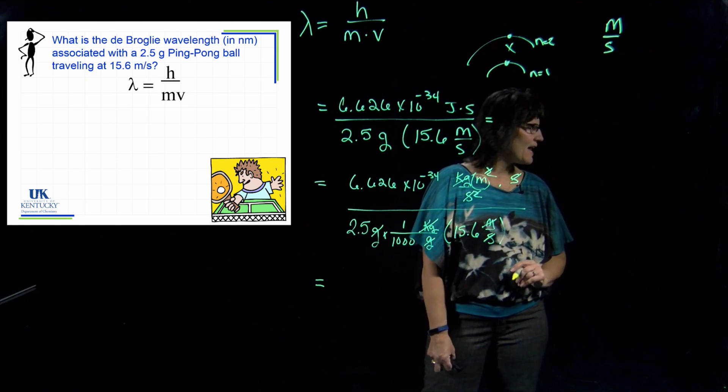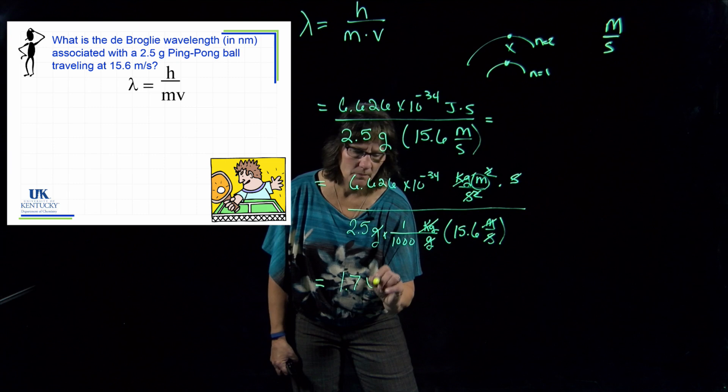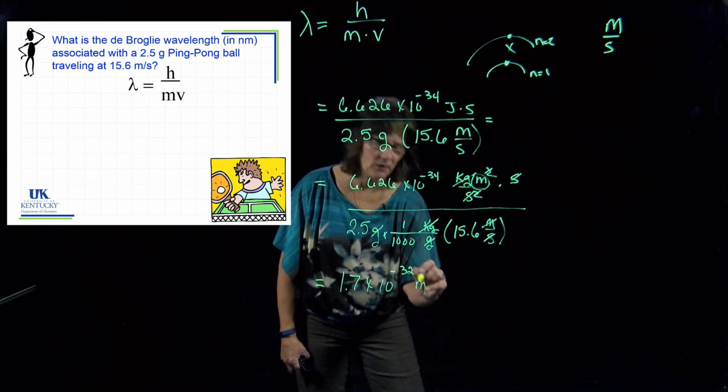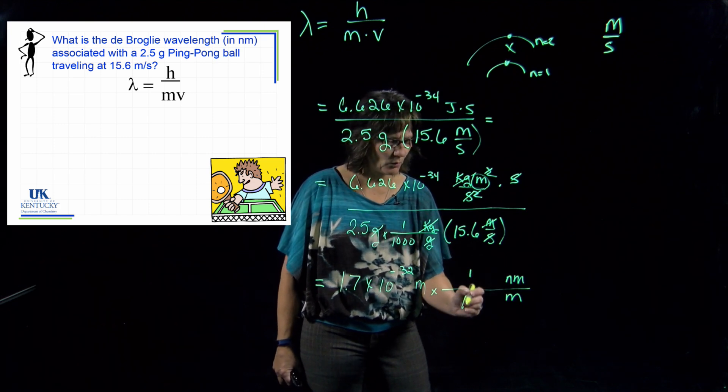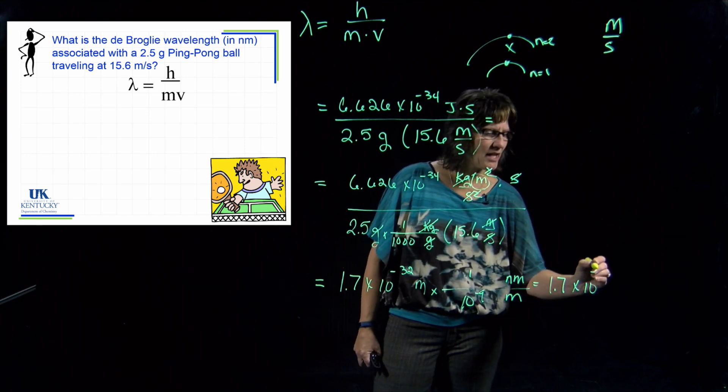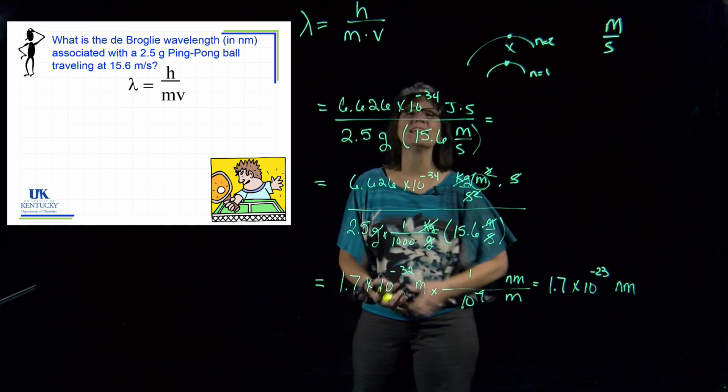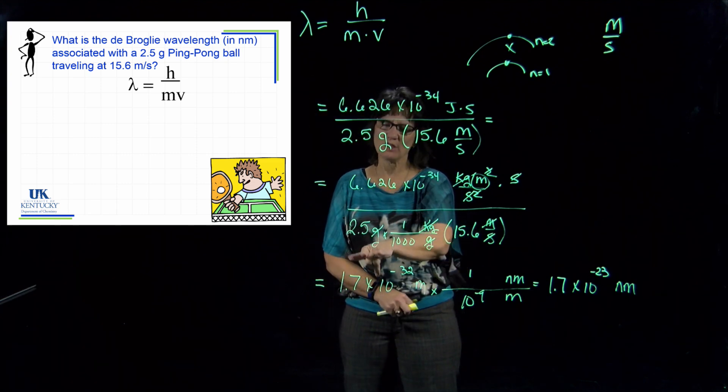So this would give me a value of 1.7 times 10 to the minus 32 meters. That's a tiny meter, so we might say, well, let's have it in nanometers—of course, that's what it's asking for. So we need to do that anyway. I don't want meters, I want nanometers, so I put a one with the prefix and what it means with the base unit, and this is going to give me 1.7 times 10 to the minus 23 nanometers.